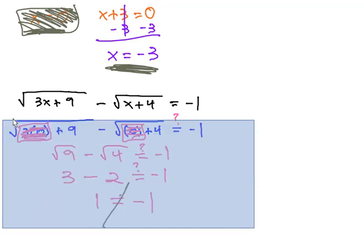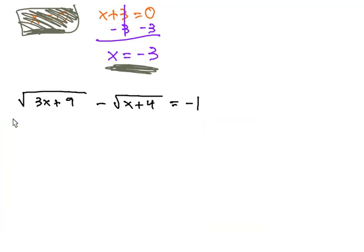So we have to throw that one out. Let's get rid of all this work here. That was all no good. Let's try the negative 3 and see if we have better luck with negative 3. We have the square root of 3x or 3 times negative 3 plus 9 minus the square root of x or negative 3 plus 4.